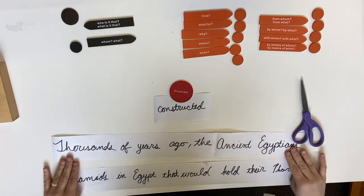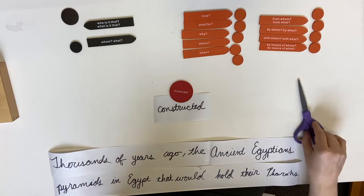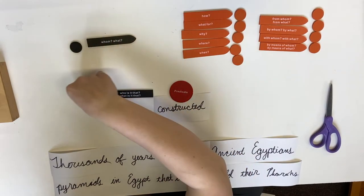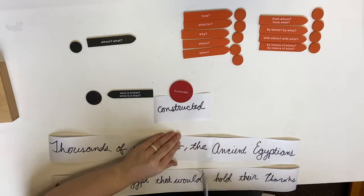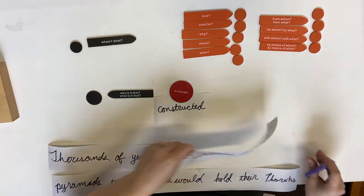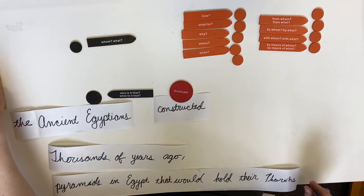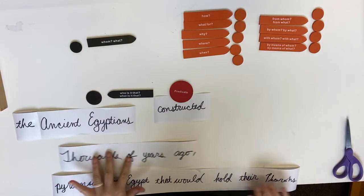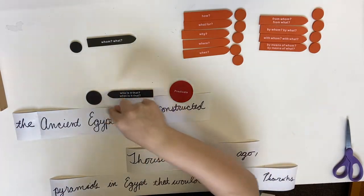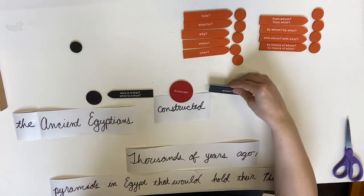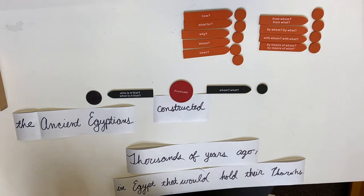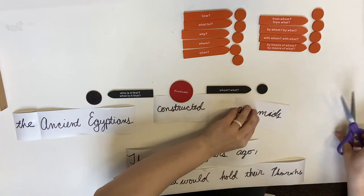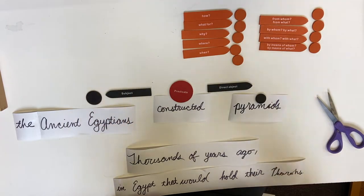So we always ask this: who is it that constructed? Who constructed something in this sentence? The ancient Egyptians. So our subject is the ancient Egyptians. The ancient Egyptians constructed what? What did they construct? Pyramids. So we have a predicate, a subject, and a direct object so far.